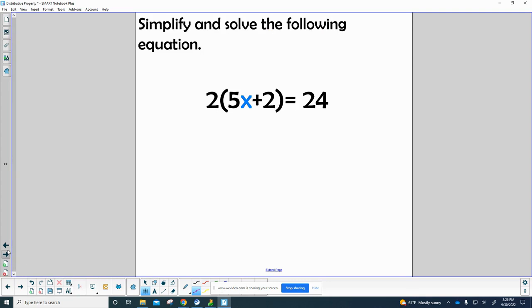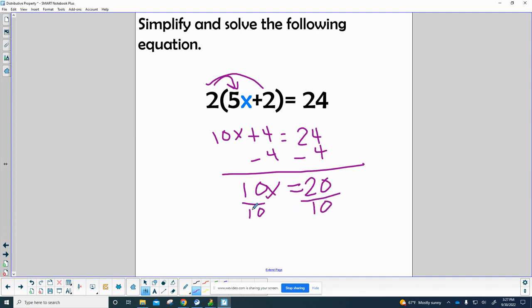Let's get right into it. Let's start with this one. We've got 2 times the parentheses 5x plus 2 equals 24. Well, 2 times 5 is 10, so 10x, and 2 times 2 is 4. All of that equals 24. Now we're going to subtract 4 from both sides, and that will give us 10x equals 20. If we divide both sides by 10, we finish up with x equals 2.